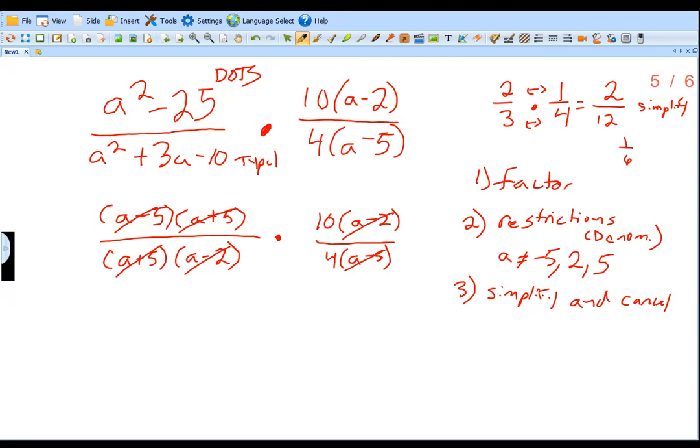Now we look at the numbers we have left. 10 over 4. So I'll rewrite what we have. We have 10 over 4. Let's reduce this fraction. Each could be divided by 2. Divided by 2. So we get 5 over 2. And that is fully simplified. Everything is there. That is our final answer.